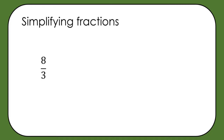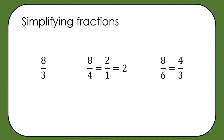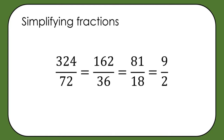We could write 8 thirds as a mixed number, but that wouldn't be any simpler — just a different way of writing it. 8 quarters, on the other hand, has a common factor of 4 between numerator and denominator, so dividing both by 4 gives us 2 over 1, which is 2. Similarly, 8 sixths has a common factor of 2, so dividing both numerator and denominator by 2 gives 4 thirds. We're allowed to multiply and divide numerators and denominators by the same thing, and particularly dividing by a common factor is what allows us to simplify.